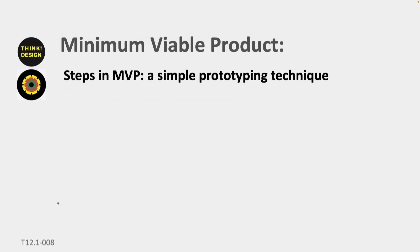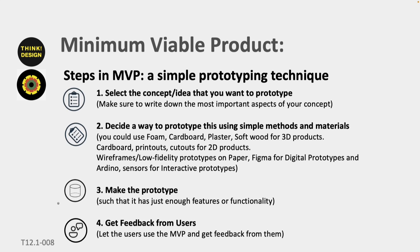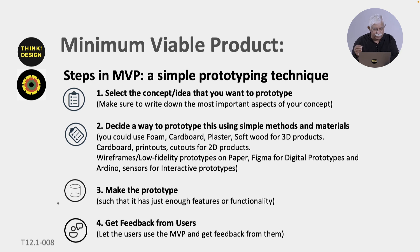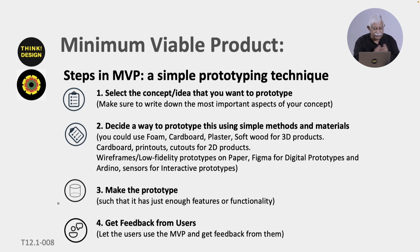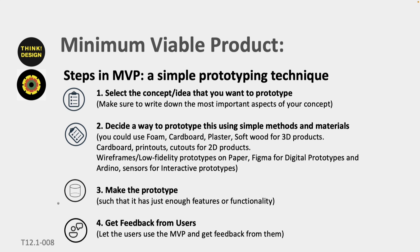If you look at the steps for MVP: first, select the concept you want to build an MVP for and write down its most important aspects. There are many ways to make it — you can use foam, cardboard, plaster, or softwood for 3D products; cardboard, cutouts for 2D products; wireframes, low-fidelity prototypes, paper, or Figma for digital prototypes; and Arduinos or sensors for interactive prototypes. Make the prototype with enough features and functionality to get feedback, give it to users, get their feedback, and then decide what to do next.